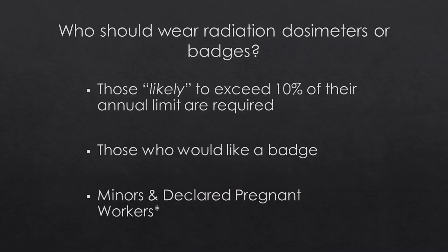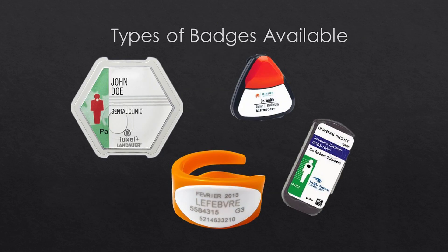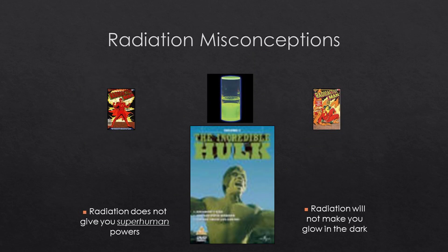Who should wear radiation dosimeters or badges? Anyone likely to exceed ten percent of their annual limit should wear one. For most of you, your limit is 100 millirem, so that's a pretty small threshold. Those who would like to voluntarily wear one may also do so, and minors and declared pregnant workers should wear a radiation dosimeter. There are different types of badges available, including whole body badges and ring badges to evaluate hand exposure.